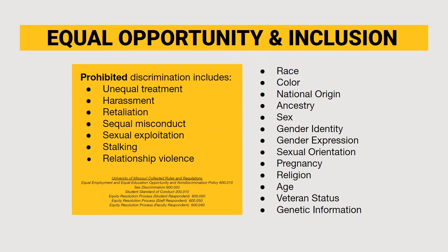The University of Missouri-Columbia is an equal opportunity and inclusion institution. The university's equal employment, education opportunity, and non-discrimination policy states that all affiliates and guests of the university should be provided with equal opportunity and inclusion and shall not be discriminated on the basis of race, color, national origin, ancestry, religion, sex, pregnancy, sexual orientation, gender identity, gender expression, age, disability, protected veteran status, and any other status protected by applicable state or federal law.